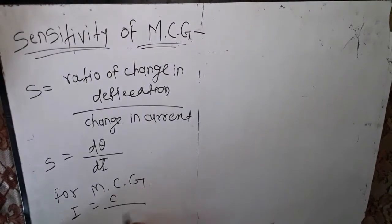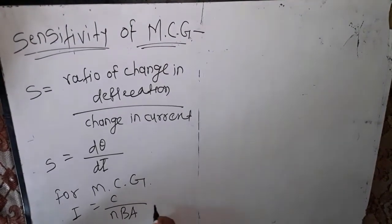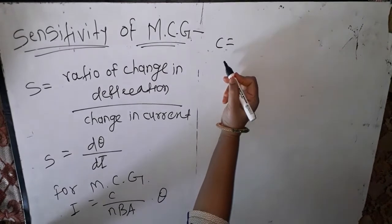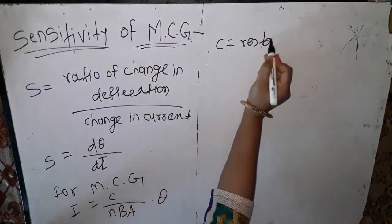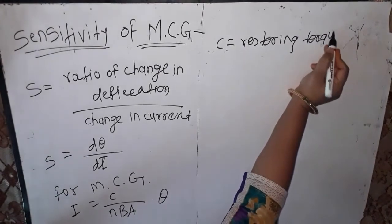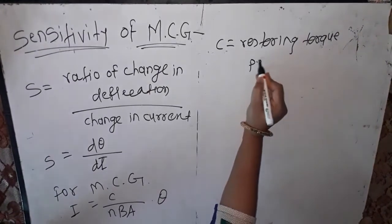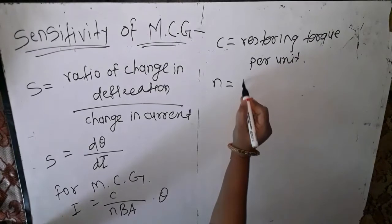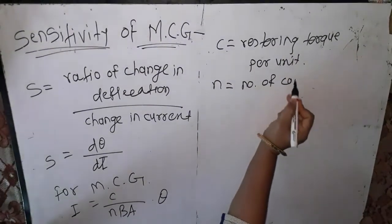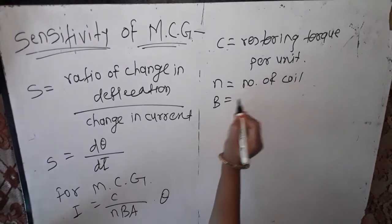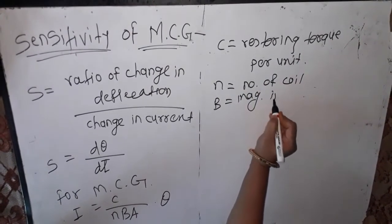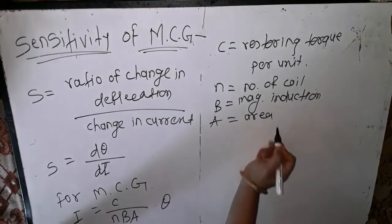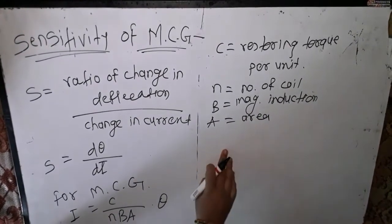For MCG, i equals c upon nBA into θ, where c means restoring torque per unit, n means number of turns of the coil, B means magnetic induction, and A is the area of the coil. Differentiating with respect to θ, we get di/dθ.